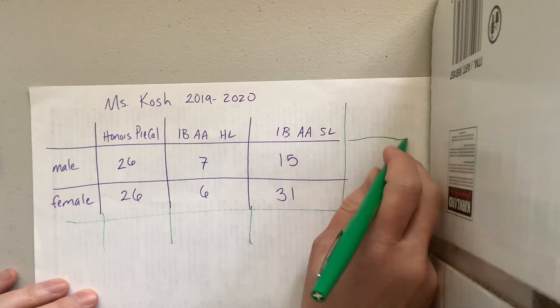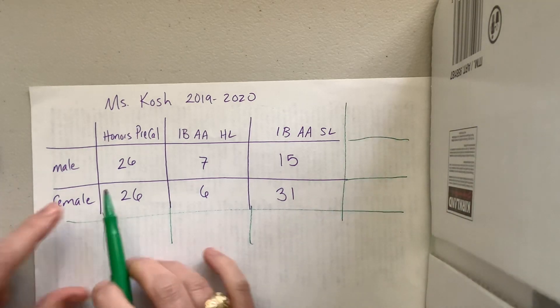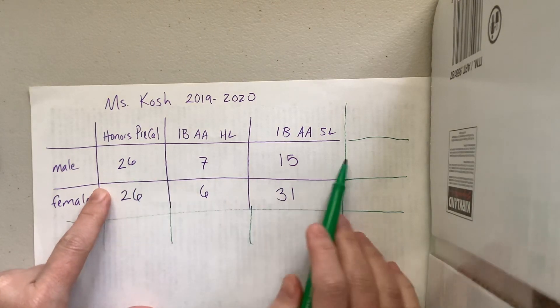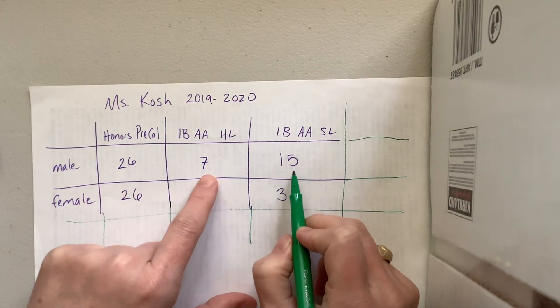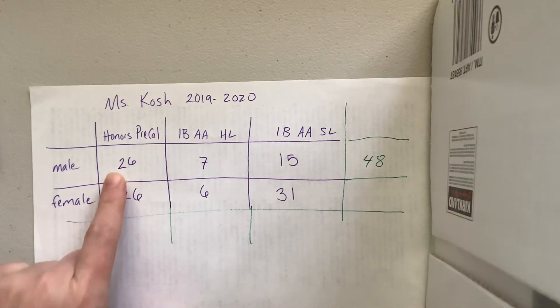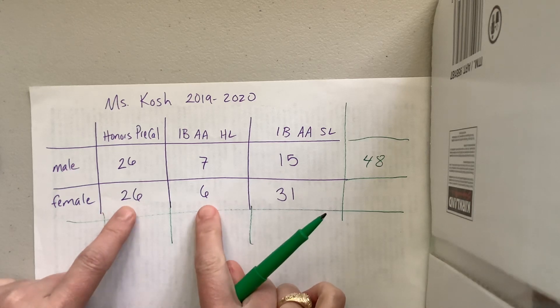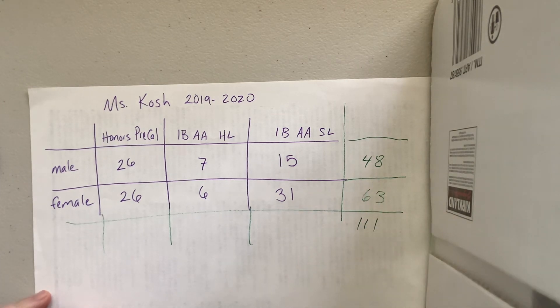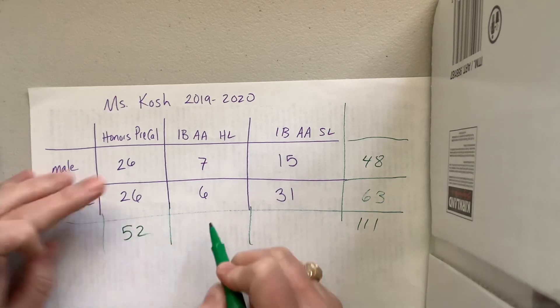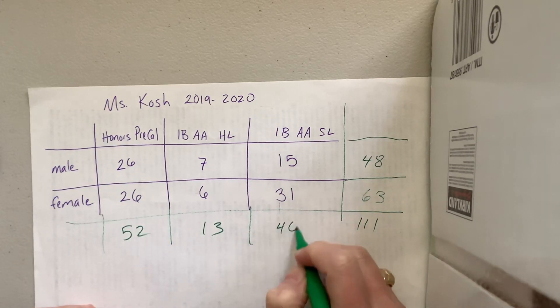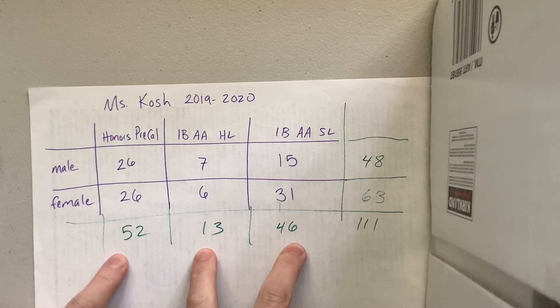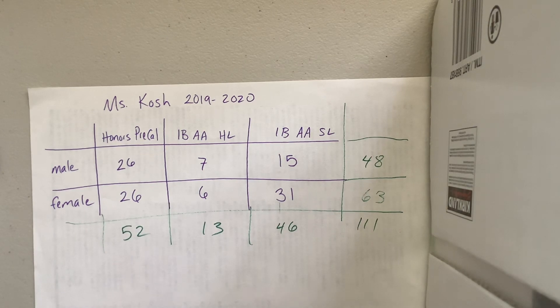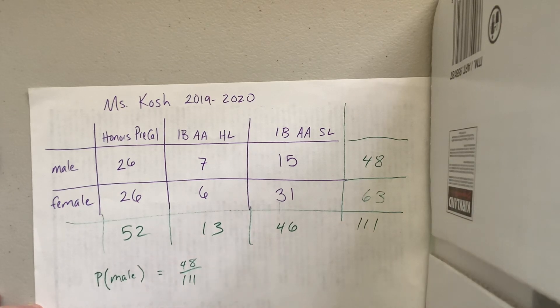And so I went through and figured out how many male and how many female. So notice what I can do in this, they may ask different kind of probability questions. What's the probability that a student chosen at random is male? Well, okay, it could be helpful also to come up with totals. 22 plus 26 is 48. This is 32 plus 31 is 63. When I add that together, I get 111. That adds up to 52, this adds up to 13, that adds up to 46. When I do that, I have 59 plus 52, sure enough is 111.